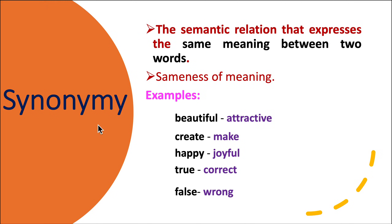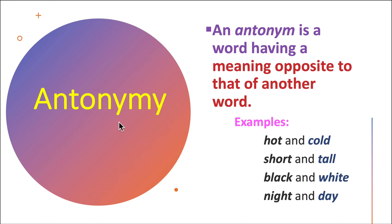We move on to synonymy — sometimes we also call it synonym. It is the semantic relation that expresses the same meaning between two words, or in other words, sameness of meaning. Examples: beautiful/attractive, create/make, happy/joyful, true/correct, false/wrong. We get almost identical meaning — sameness of meaning between two words — and this is what is referred to as synonymy.